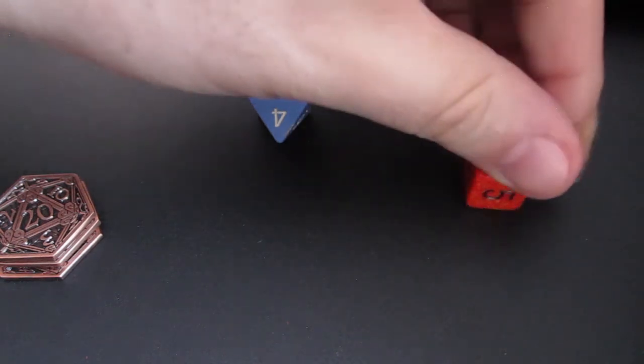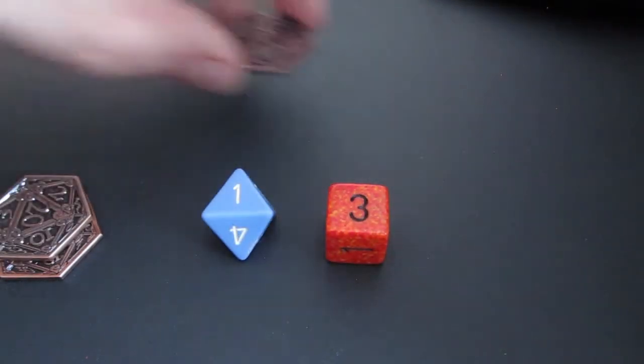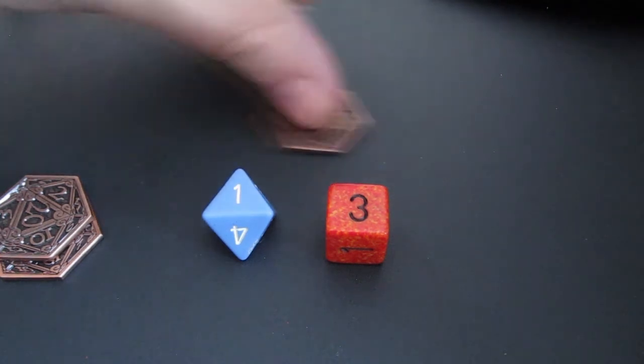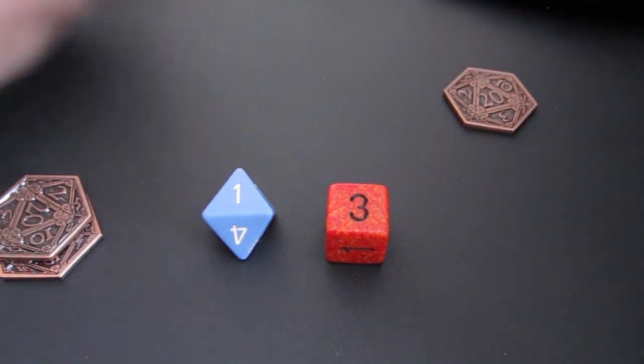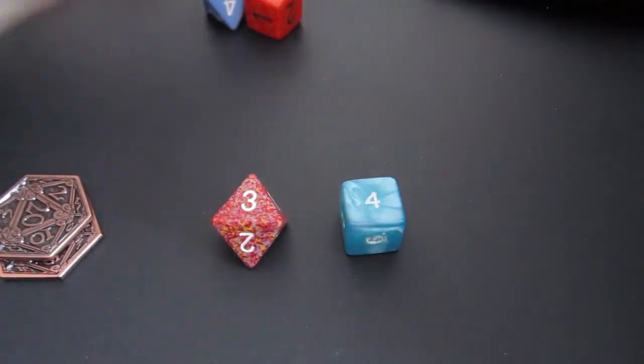Here I've rolled a d8 trait die and a d6 wild die to disappointing results. So, I spend a bennie and re-roll. This result is better, a 4, so I keep the new result.